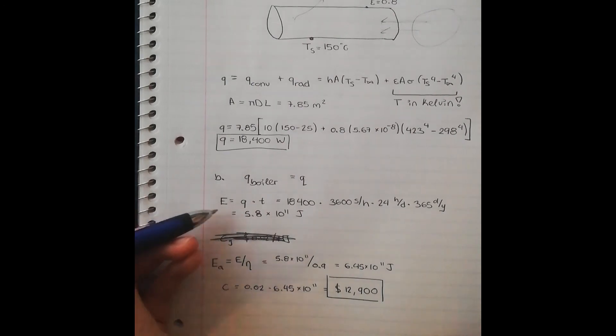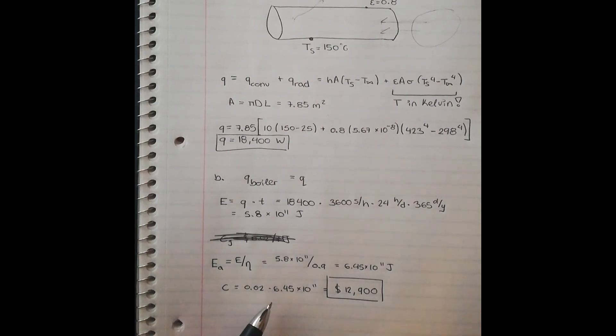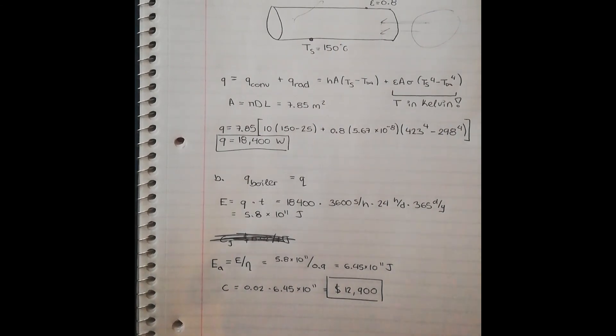So we found the nominal energy assuming 100% efficiency, then we accounted for the imperfect efficiency of the boiler, and then we had to multiply by the cost per megajoule to find the actual energy cost for the whole year.